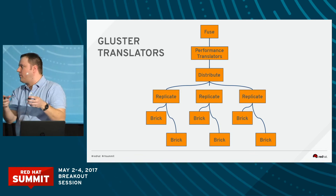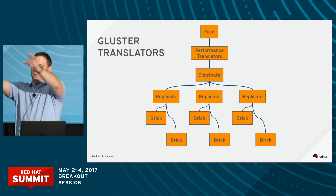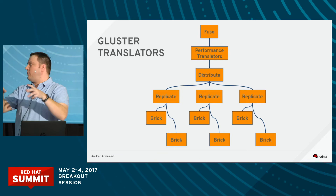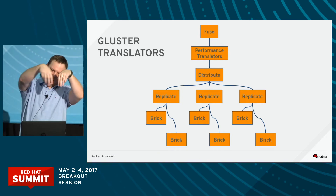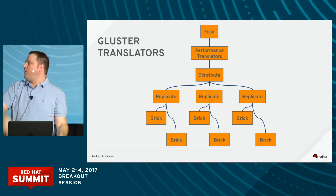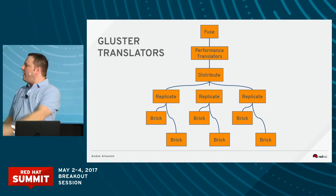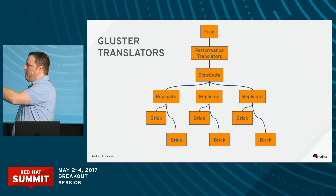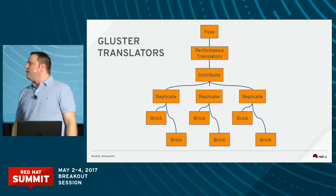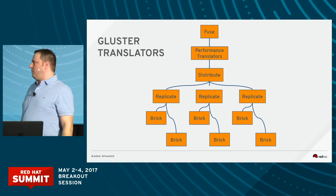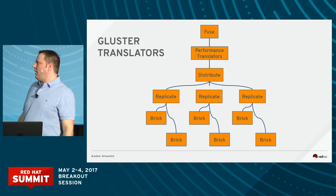Once we get to distribute, it splits into three tubes. Once we get into replicate, that splits into three more tubes. And then the file goes to the actual brick itself.